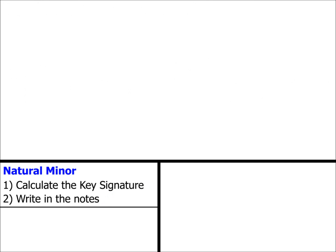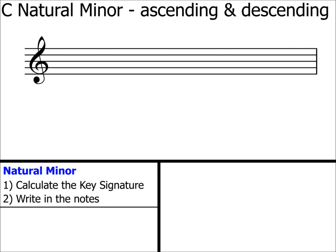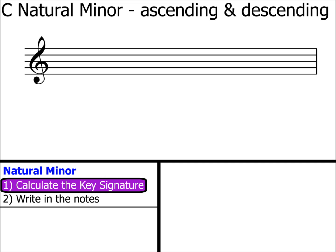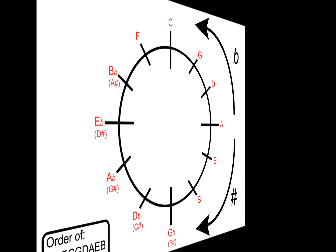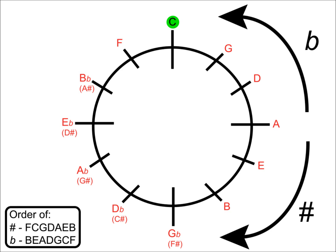Let's try just one final natural minor example. C natural minor ascending and descending. Step 1. Calculate the key signature. Here's our circle of fifths. Find the C. Here it is,